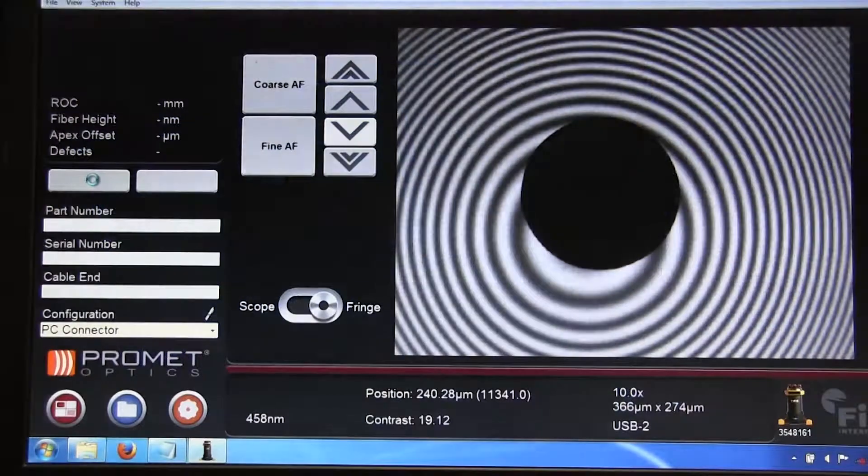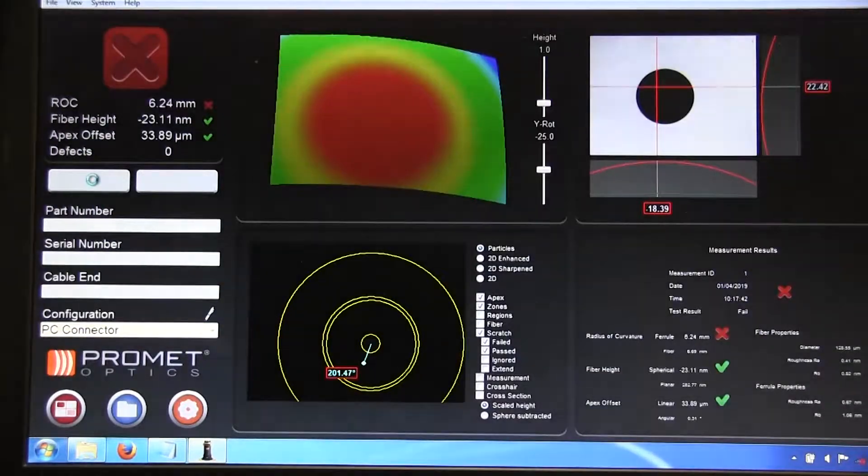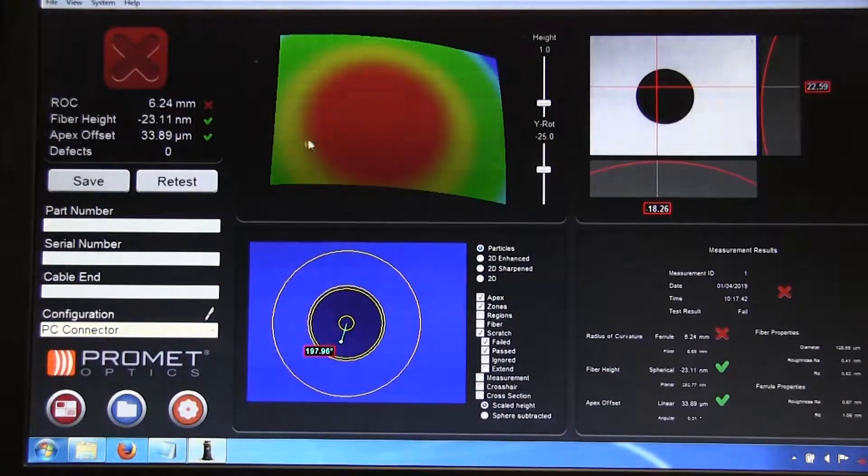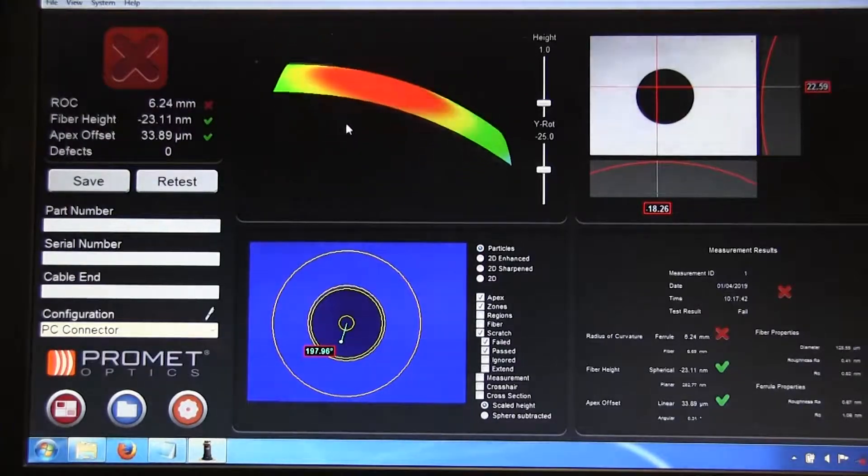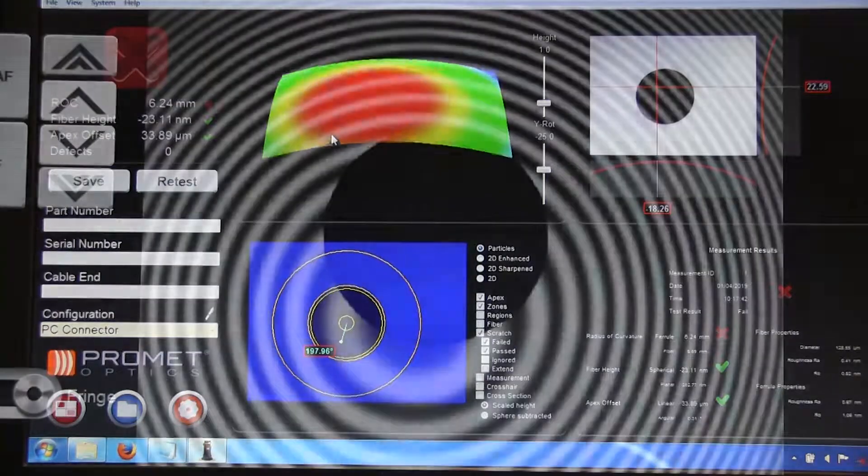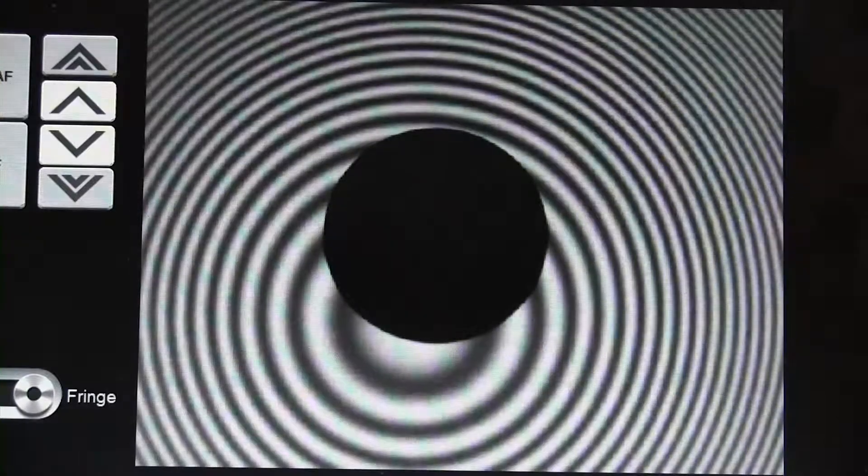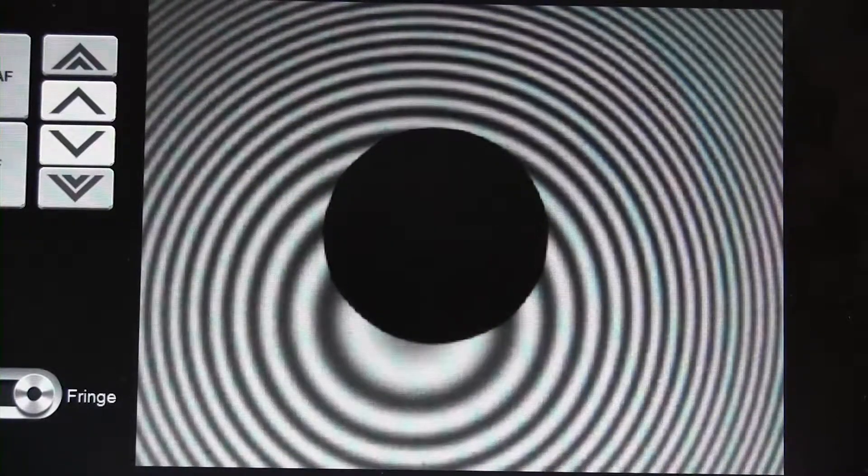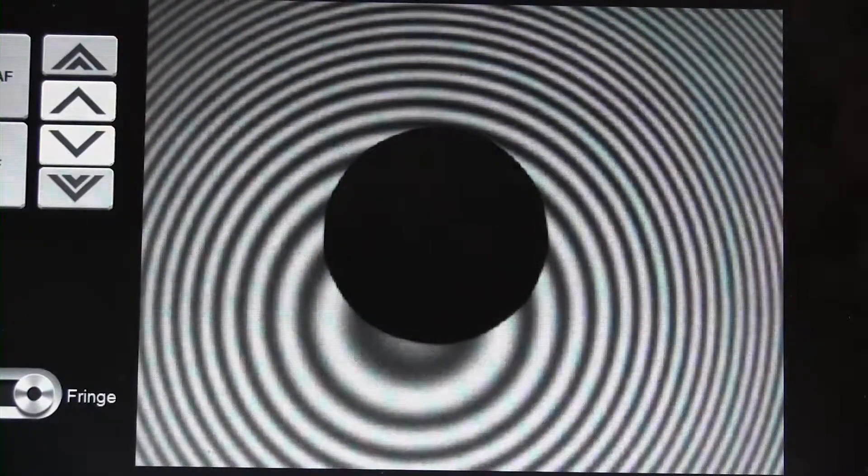Optical interferometry is a non-contact measurement technique that relies on the interference between two beams of light. Optical interference occurs when two coherent beams of light overlap.